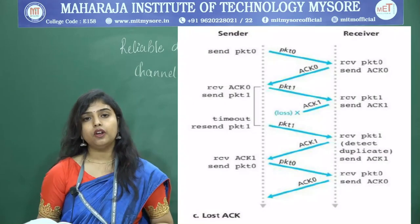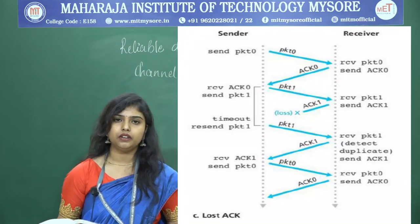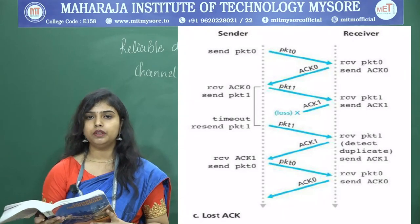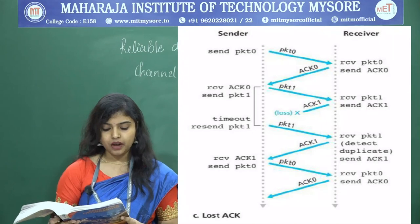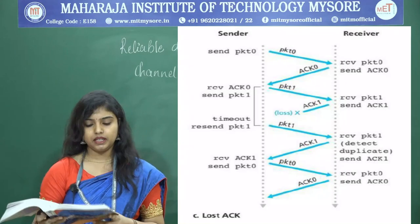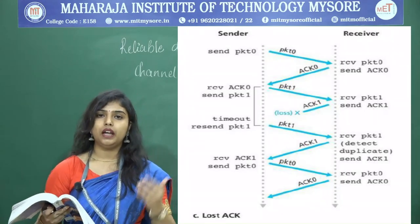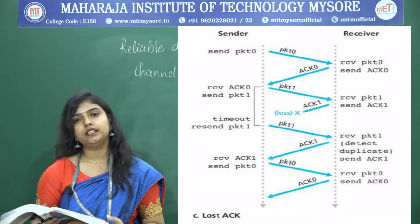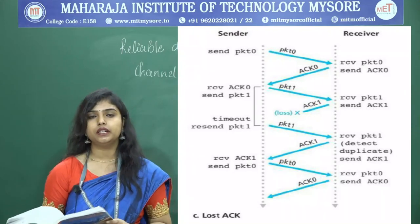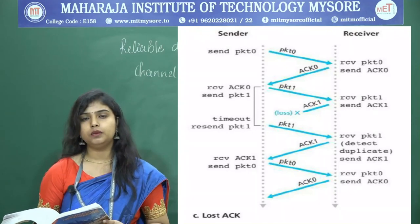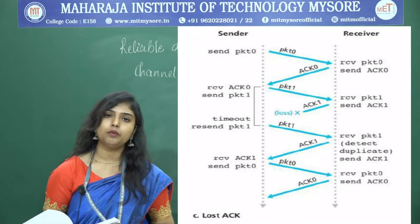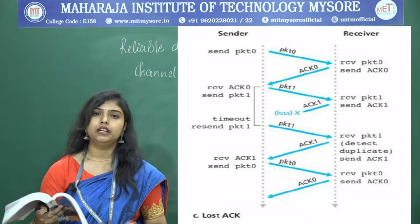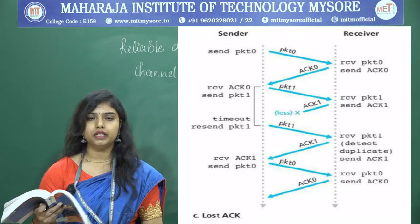The next case is the acknowledgement getting lost in the network. Packet 0 is sent and correctly received, acknowledgement 0 is correctly received by the sender. The sender sends packet 1, the receiver correctly receives it and sends acknowledgement 1. But acknowledgement 1 gets lost while travelling back to the sender. When the acknowledgement is not received in time, the timeout occurs and the sender retransmits packet 1. The receiver sends the positive acknowledgement again, but the duplicate packet 1 will be deleted by the receiver.